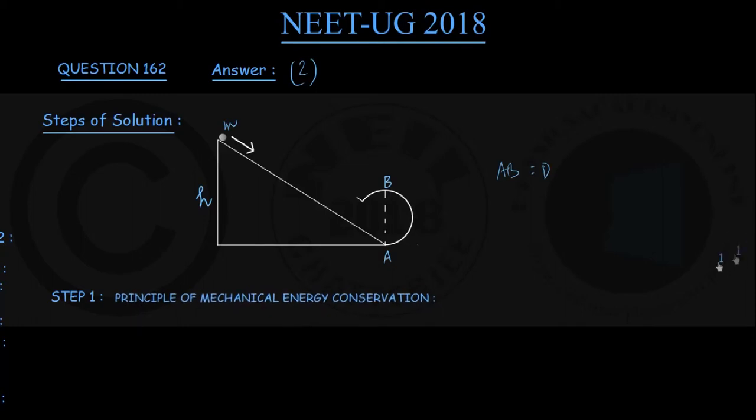We assign a number 1 to the initial position of this body at the top of the incline and assign a number 2 at the bottom of the incline, this point 2 coinciding with point A. Since there is no friction on the track, the only force doing work during the motion of the body is the conservative force of gravity, and therefore we can apply the principle of conservation of mechanical energy between these two points.